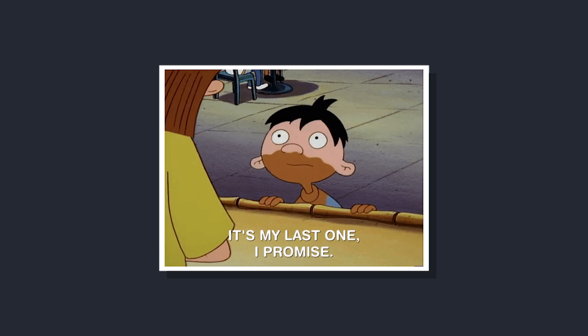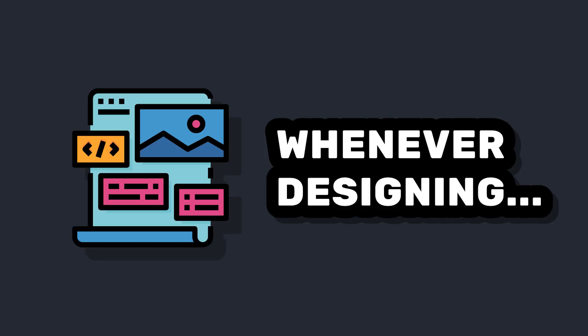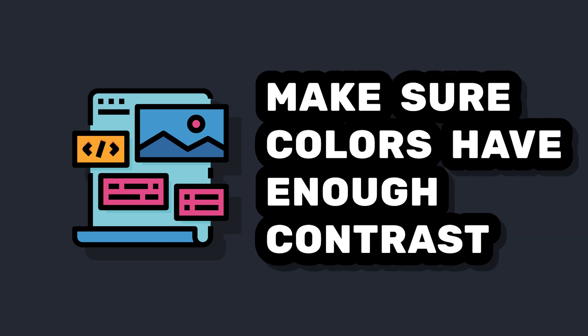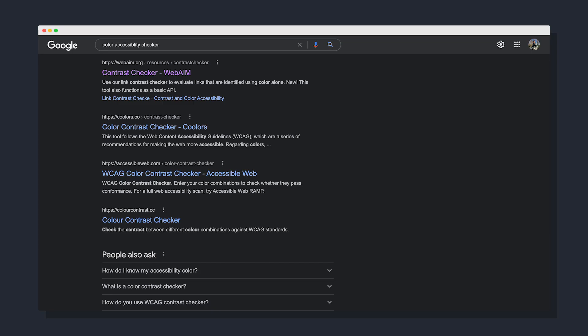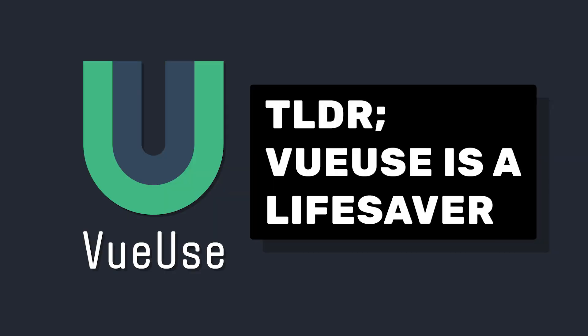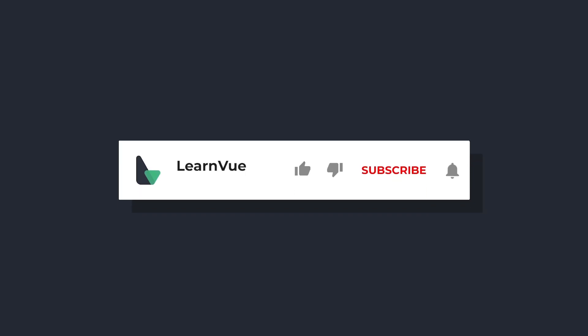One more general recommendation: whenever you're using colors — but especially when worrying about two sets of themes — make sure that your colors are accessible and have enough contrast between your text color and your background color. There are tons of free tools for this to make sure that your websites have enough contrast. So that's all for this video. I hope you learned how VueUse makes it super simple to add a dark and light mode to your website.